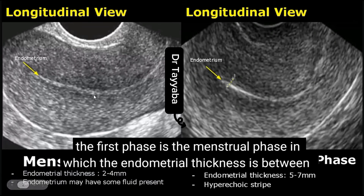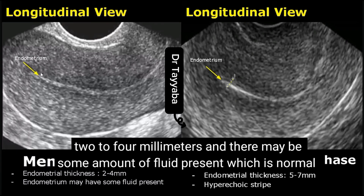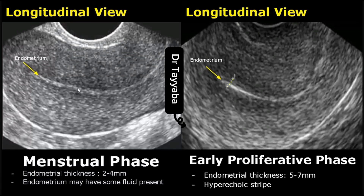The first phase is the menstrual phase, in which the endometrial thickness is between 2–4 mm, and there may be some amount of fluid present, which is normal.